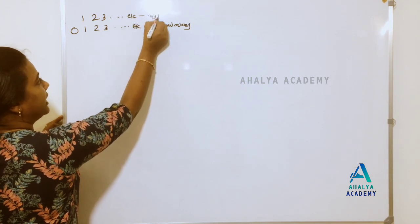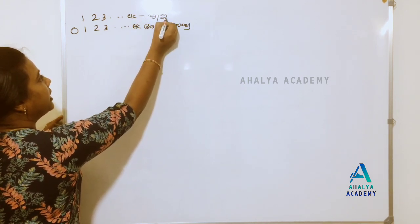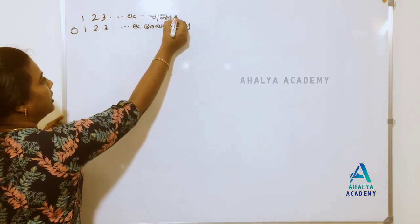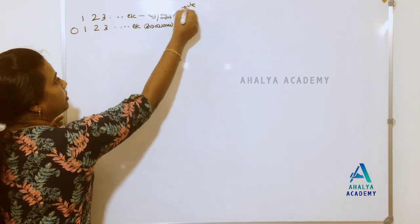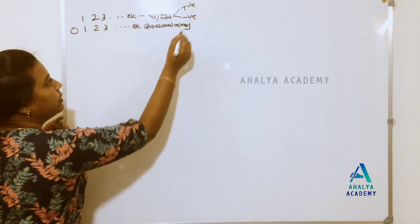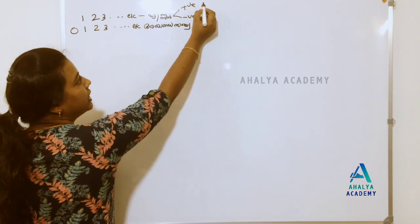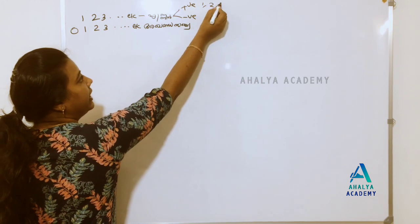There is a classification called positive numbers and negative numbers. Positive numbers are 1, 2, 3.